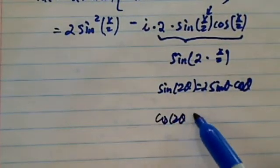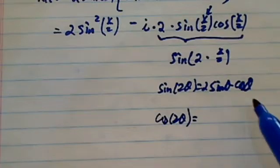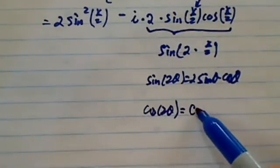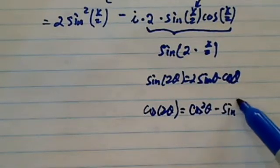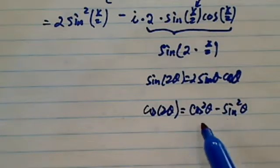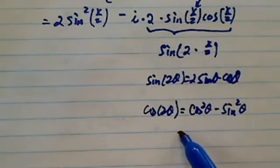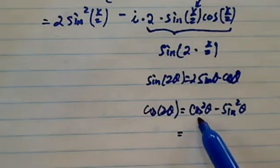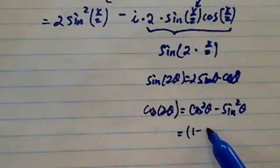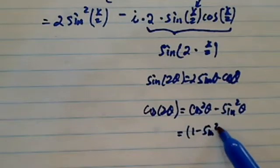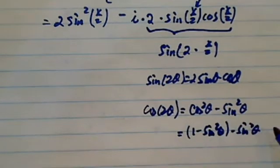Cosine of 2 theta is a little bit tricky. It has a couple more forms. The easiest one to remember, of course, is this one, cosine squared minus sine squared. And if you use the trig identity, you can place this one and transform it as, say, for example,